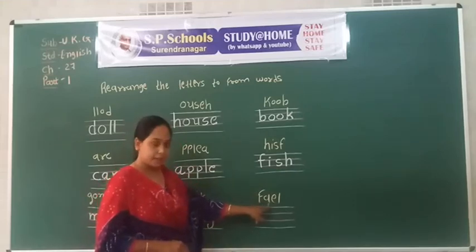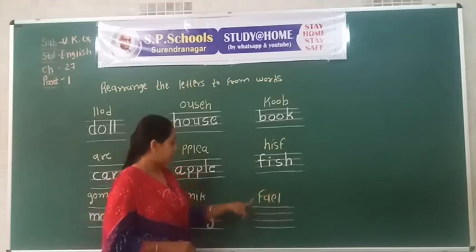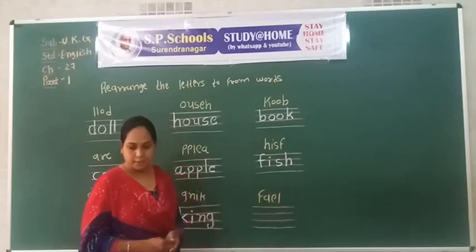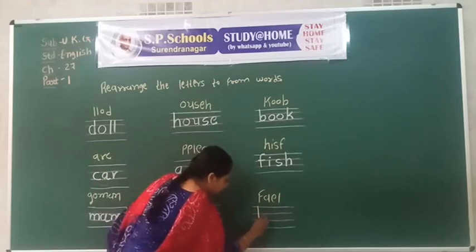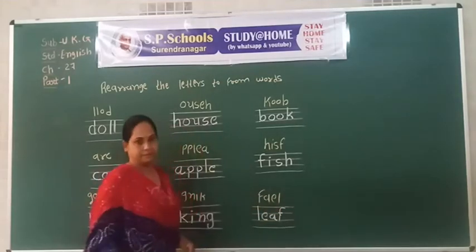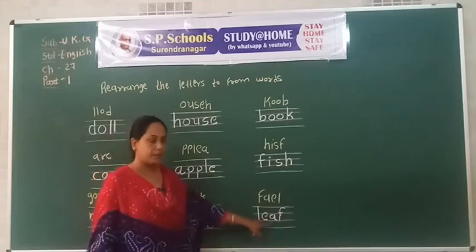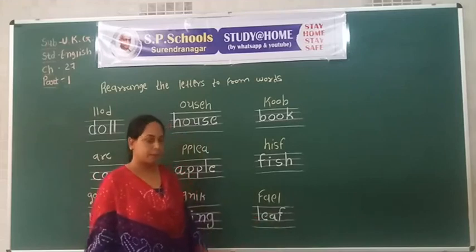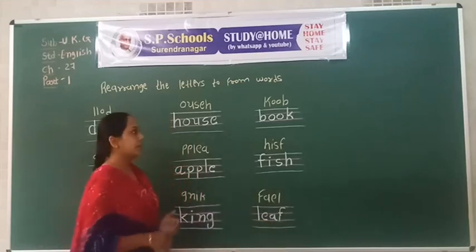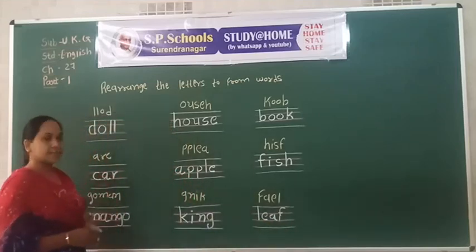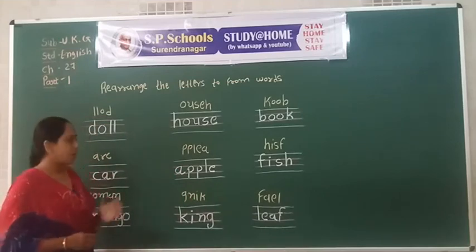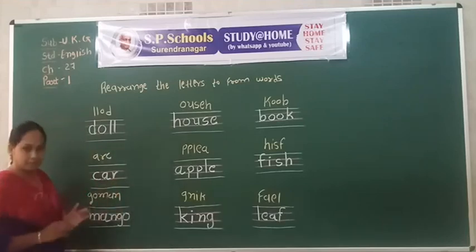Next word: F, A, E, L. L, E, A, F. Leaf! L, E, A, F. Leaf! L, E, A, F. Leaf. Repeat now.